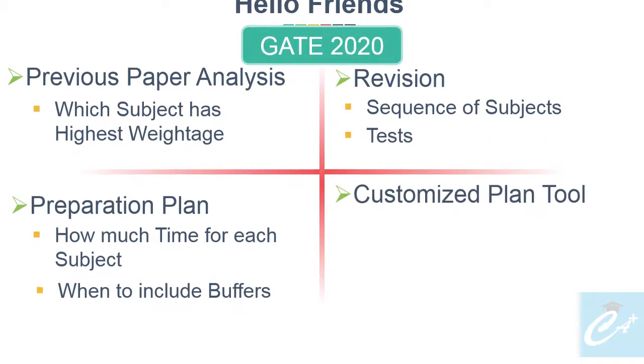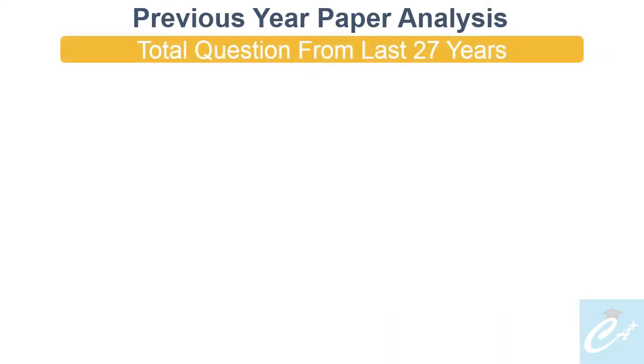This is the Customized Plan Tool. Let's start with point number one: Previous Year Paper Analysis. Since we have only 6 months left, we will focus only on the most important topics, and these topics we will get from analyzing previous year papers.